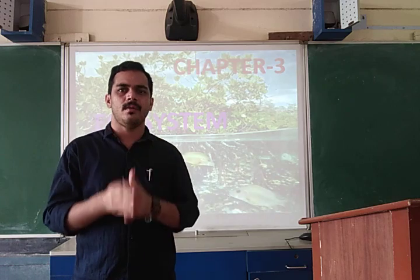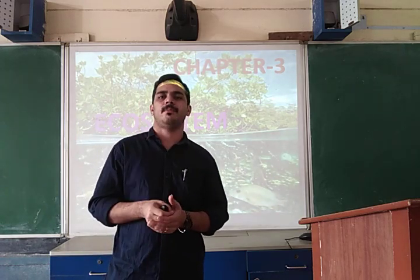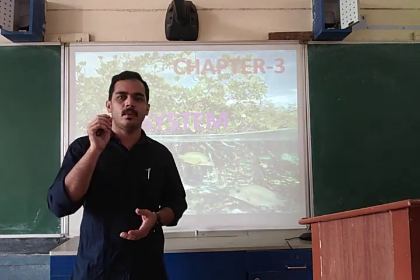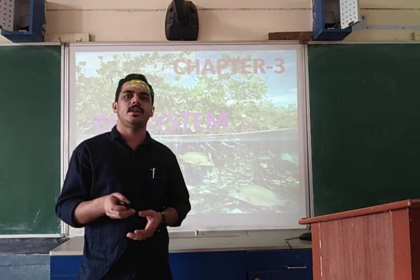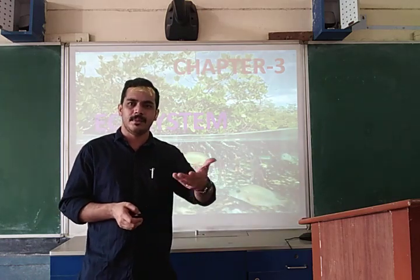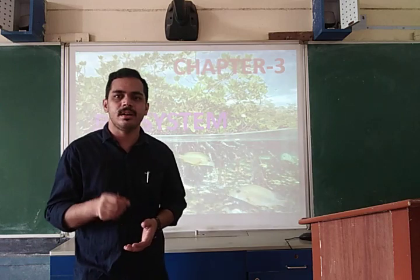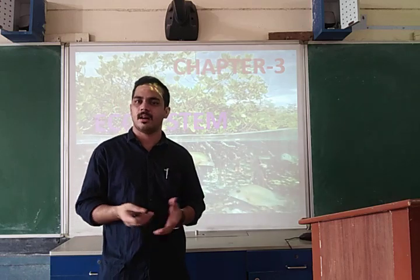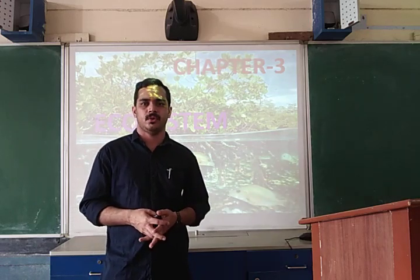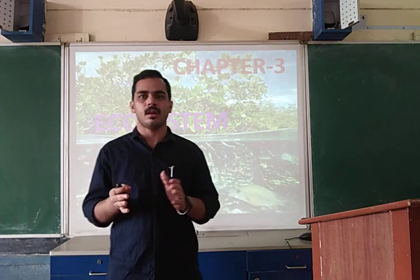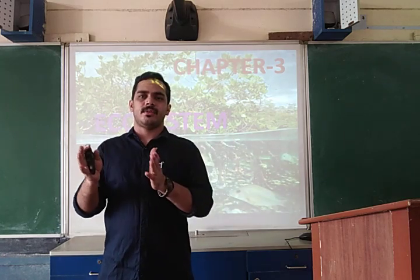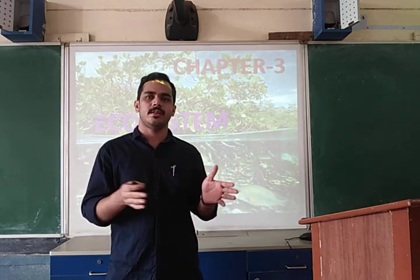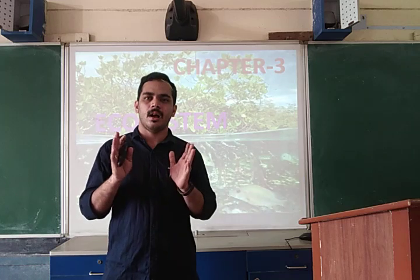I will explain to you what is meant by the ecosystem — the definition of ecosystem. Ecosystem is the structural and functional unit of the biosphere, consisting of a community and the physical environment. In other words, all the entire organisms in an area together with non-living components is called an ecosystem. So ecosystem includes plants, animals, human beings, microorganisms, light, temperature, soil, and water — everything is included. It is an ecosystem.